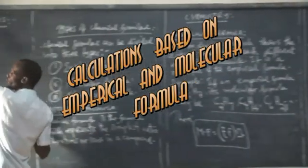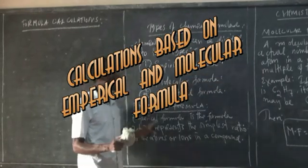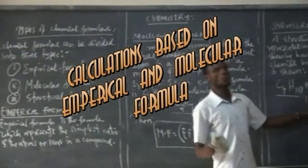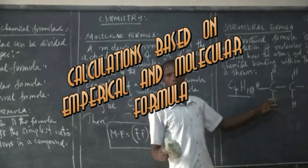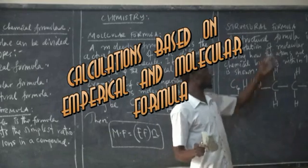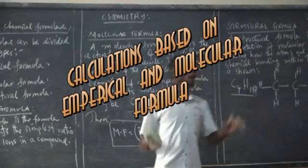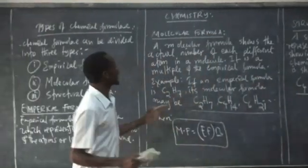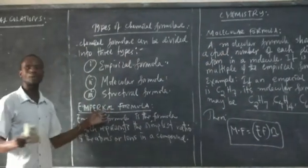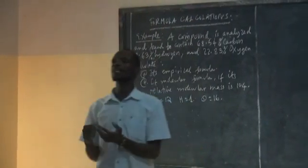We call it the formula — calculation. We are not going to calculate the structural formula, but we are going to calculate the empirical formula and molecular formula. We won't deal with the structural formula in detail now. When you get into Form 4 and learn about organic chemistry, you will learn more about it. According to our level, we are going to deal with how to calculate the molecular formula and the empirical formula.